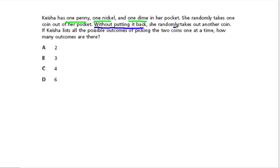After that happens, she randomly takes out another coin. If Keisha lists all the possible outcomes of picking the two coins, how many outcomes are there? Well, one way to think about this is to set up a tree diagram.